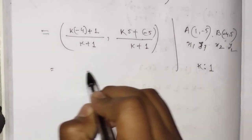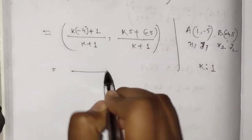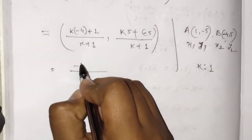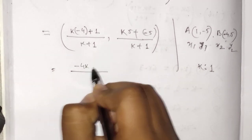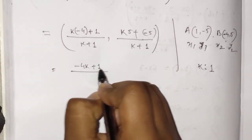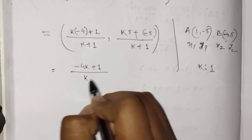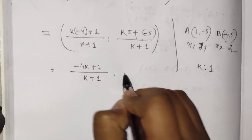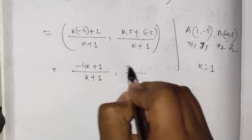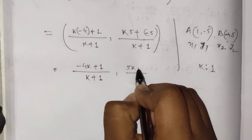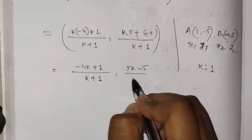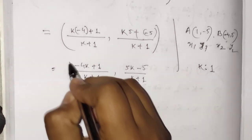Simplifying: x = (-4k + 1) / (k + 1), and y = (5k - 5) / (k + 1).